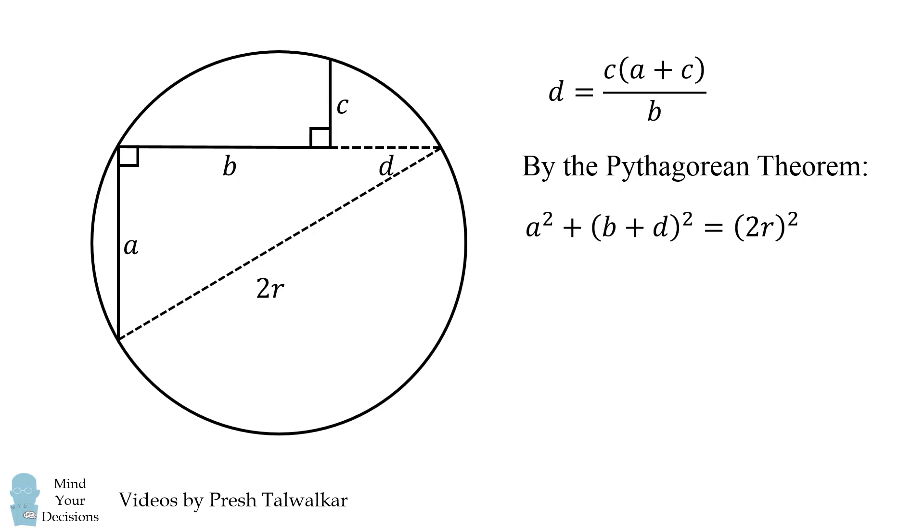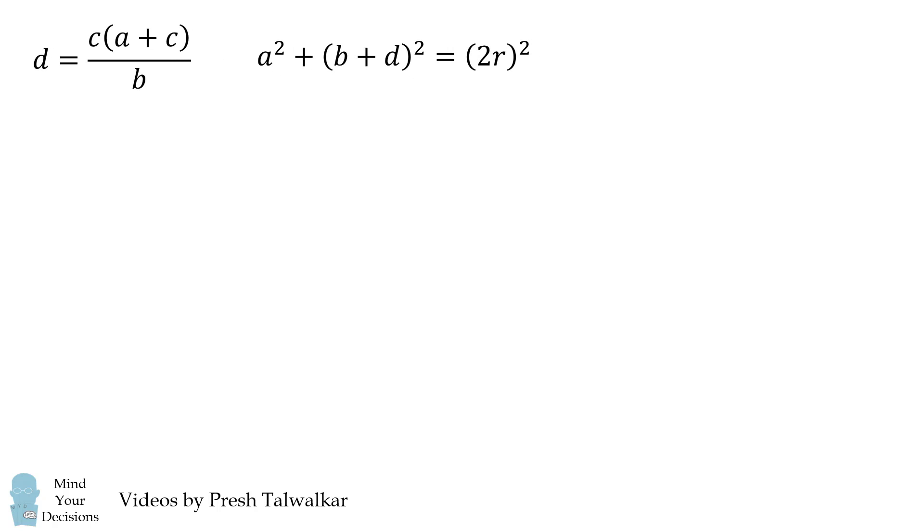And at this point, we need to use algebra to solve this problem. So we first substitute in D is equal to C times the quantity A plus C all over B into this Pythagorean theorem formula.